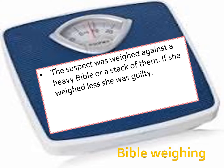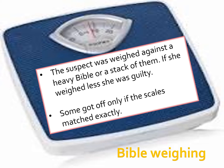Another way to test if someone was a witch was Bible weighing. The suspect was weighed against a heavy Bible or a stack of Bibles. If she weighed less than the Bible or stack of Bibles, she was deemed guilty. Some got off only if the scales matched exactly — if you weighed the same as the Bibles you would get off, but if you weighed less, you could be found guilty. They would keep adding Bibles to see if there was a balance or to confirm you weighed less.